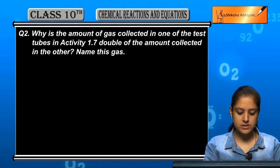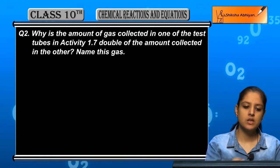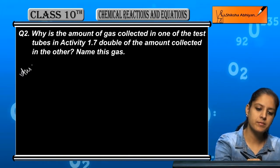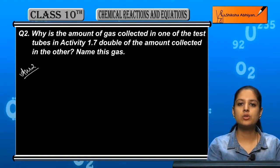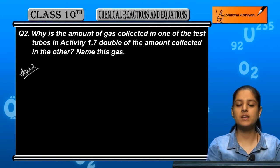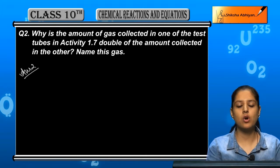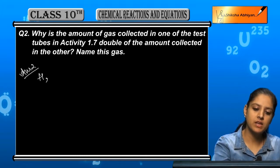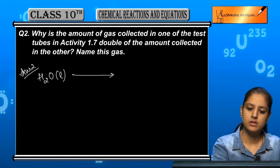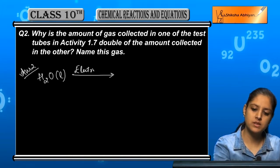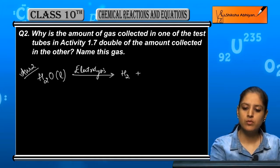So the question asks that when water undergoes electrolysis in an experiment with two test tubes, one test tube collects double the amount of gas. Which gas is collected in the other? When water undergoes electrolysis, that means when we pass electricity through water,